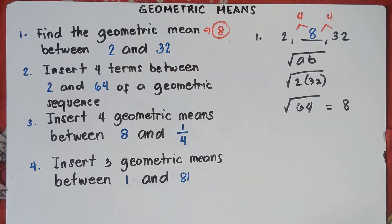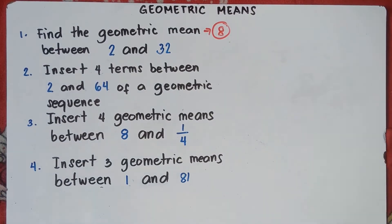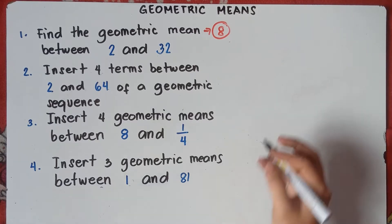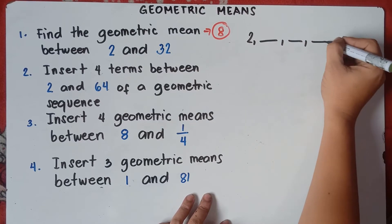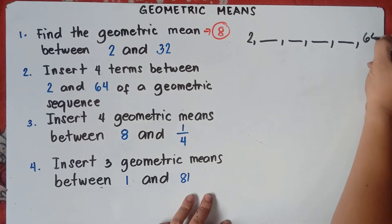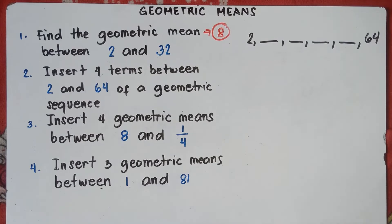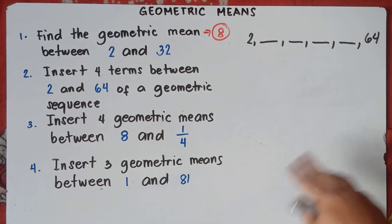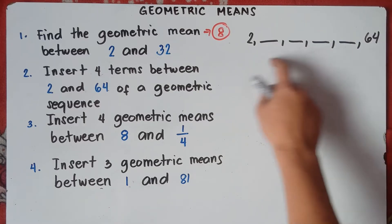Let's try a more complicated one — number 2. Insert 4 geometric means between 2 and 64. So we write 2, then insert 4 terms, and the last number is 64. The thing we need to do is get the common ratio. This is very important. Once you get the common ratio, you can multiply it by 2 repeatedly and get all the terms. We will use the formula of geometric sequence: a sub n equals the first term multiplied by r, raised to the power of n minus 1.